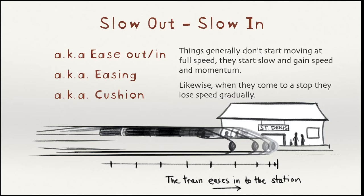Another animation fundamental — one of the 12 principles — is slow out and slow in, also referred to as ease out and ease in, or easing. Sometimes it's called cushion. Generally, it refers to the fact that things don't suddenly come to a stop; they slow down gradually, or they speed up gradually. If you look at the representation of the timing along this little line, as a train is coming into the station, it doesn't just suddenly stop — it kind of slows as it comes in, and that's represented by the spacing.